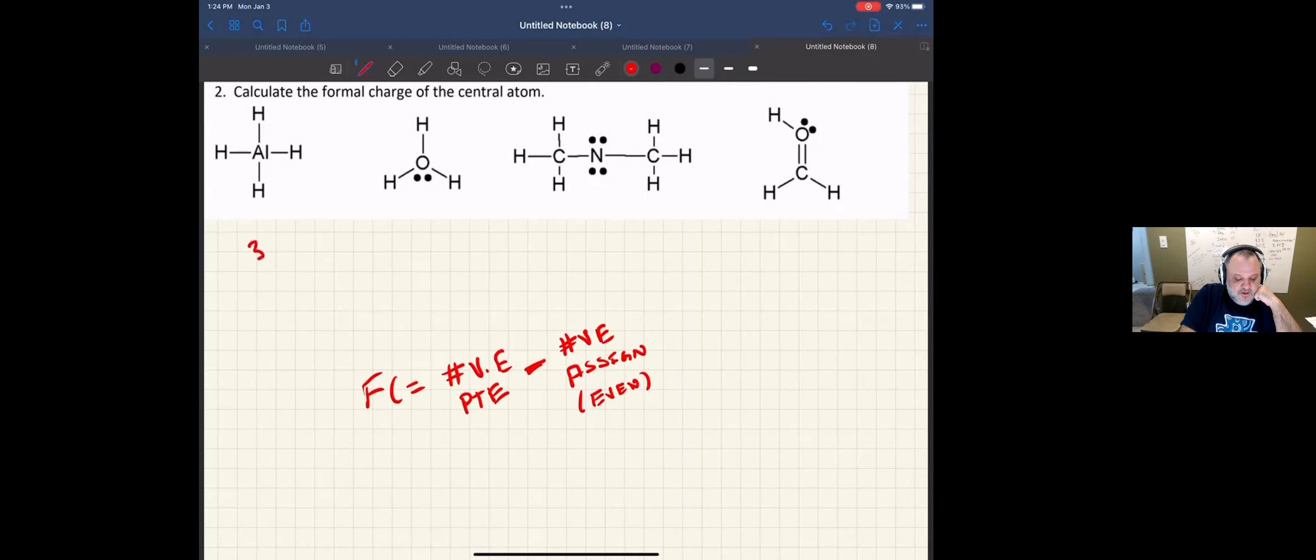So for this one, aluminum should have three electrons from the periodic table of elements. That's because it's in group 13. We'll split each bond and split the electrons evenly. So I would assign it four. So four minus three is minus one. That's the formal charge on aluminum.